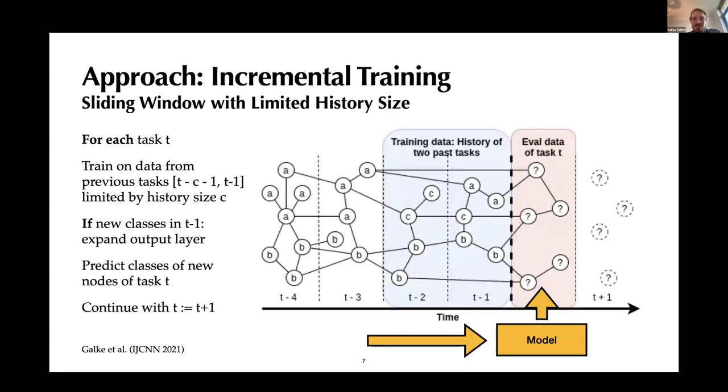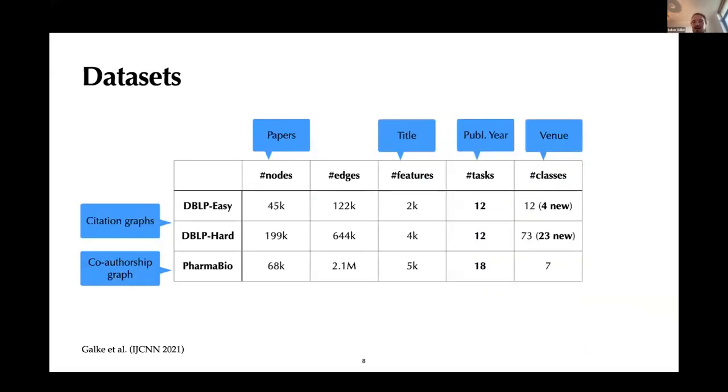So as spoiled already, the approach is very simple. We just split the graph into snapshots based on time. So we have here a publication metadata graph. The publication year essentially determines the task in which a particular document falls, and the connections between the nodes are citations, for example. And what do we do? We keep a memory for replay, and this memory is determined by a certain history size that is just a time span essentially of a couple of years. We will investigate it in more detail. And if there is a new class appearing in the training data, of course, then we adapt the output layer and make it a bit larger. Okay, this is a basic framework that will go through all three topics.